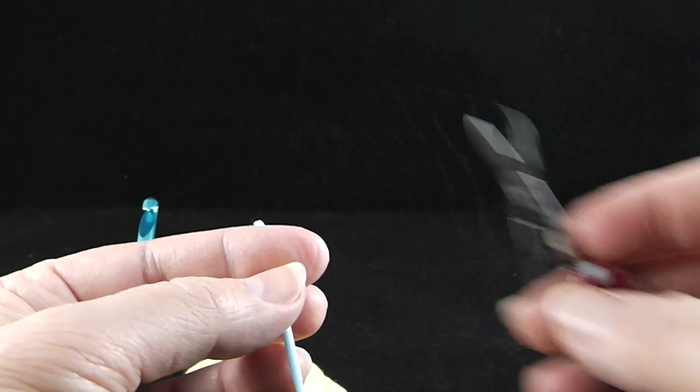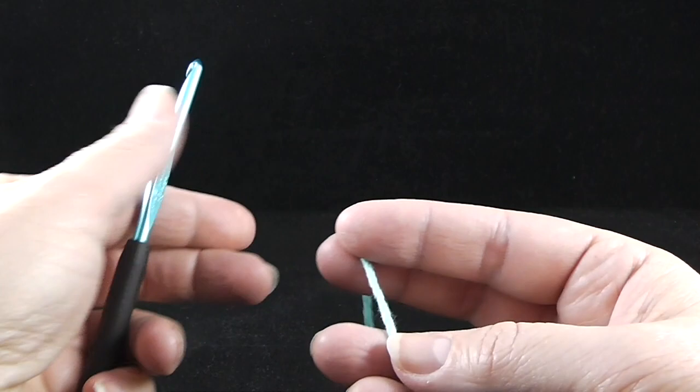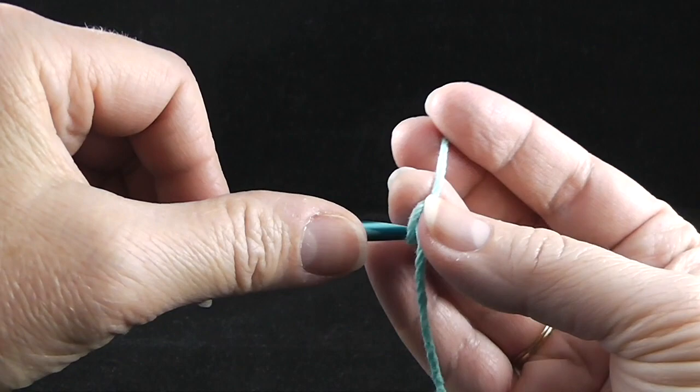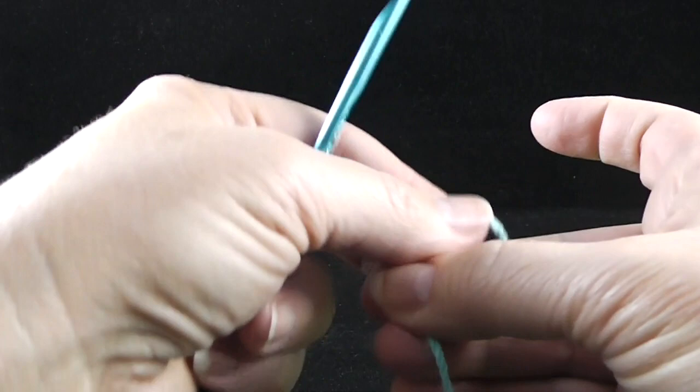OK, let's go ahead and get started. The first thing we're going to do is begin with a slipknot. And I'm going to go slowly over this, especially if you're a brand new beginner. For this, I'm going to twist the yarn with the hook like so and then come up under and pull the strand through to make my slipknot.